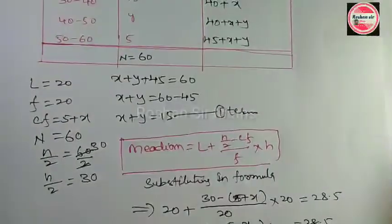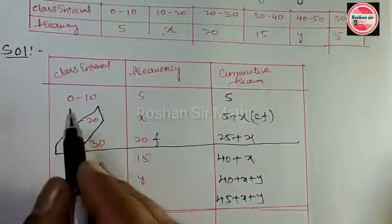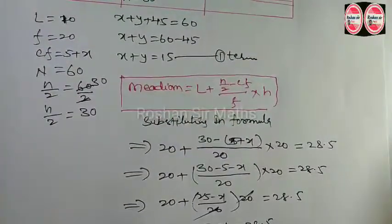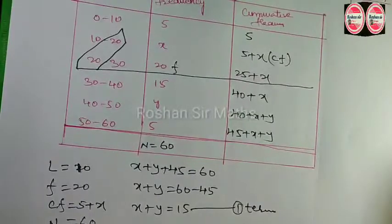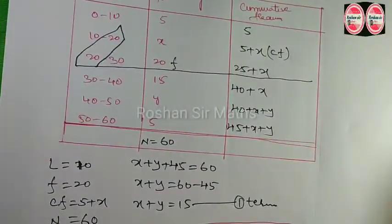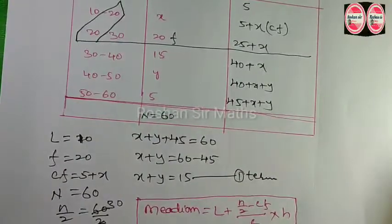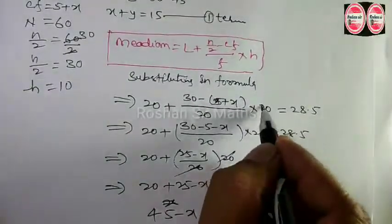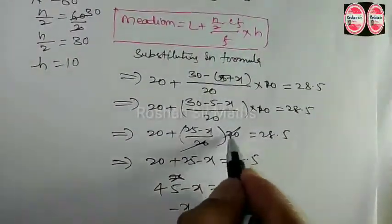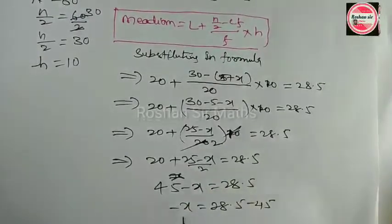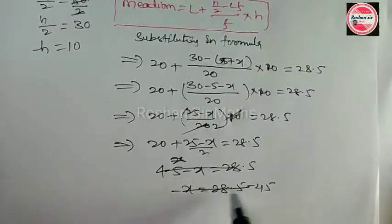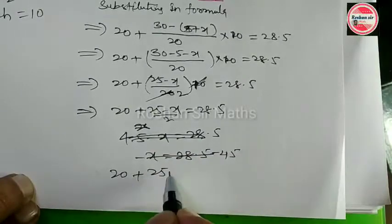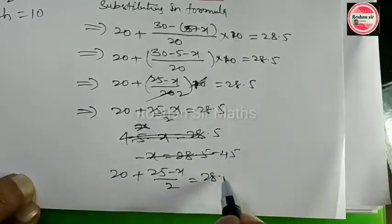Correction: L is equal to 20, and H is equal to 10 — not 20. So we correct this. Cancelling the earlier step, the corrected equation becomes: 20 plus (25 minus x) by 2 is equal to 28.5.